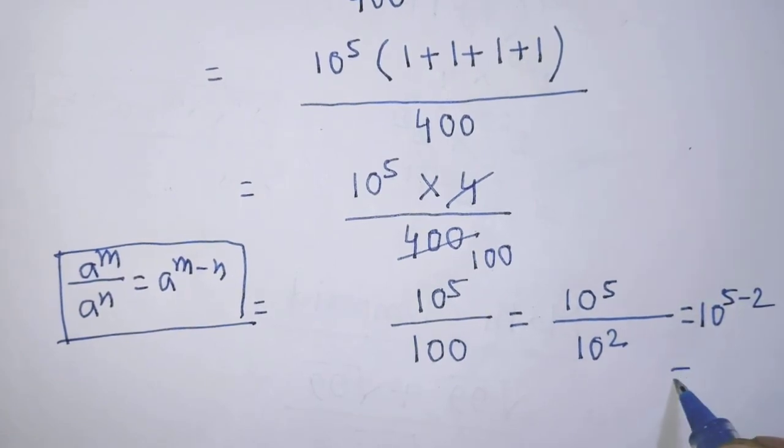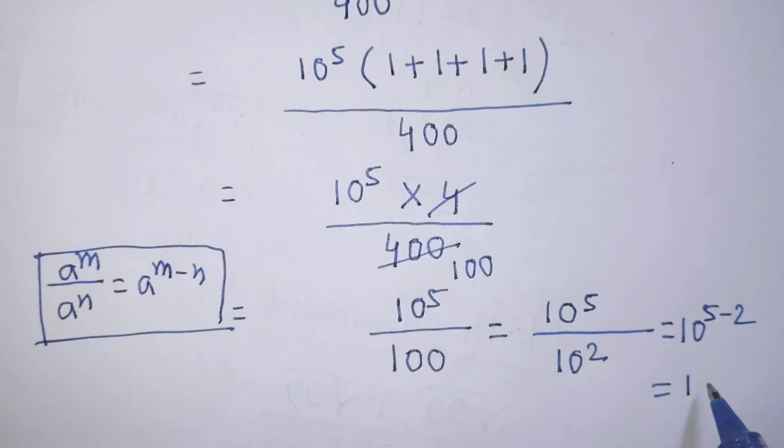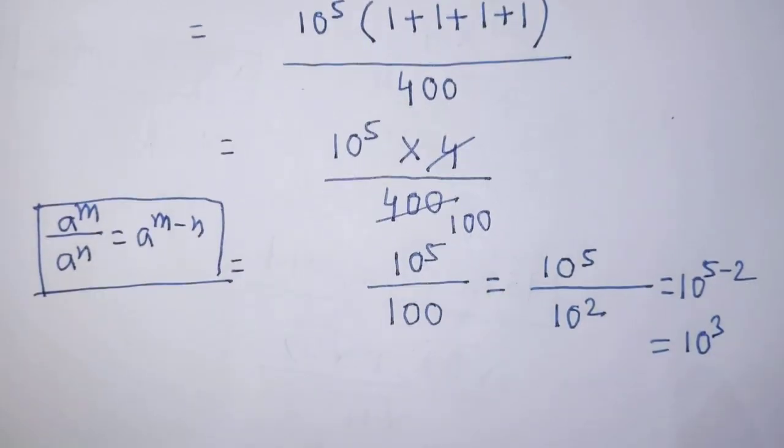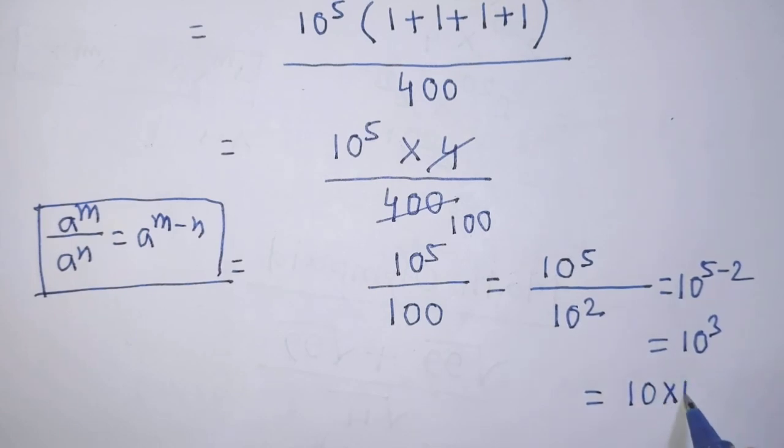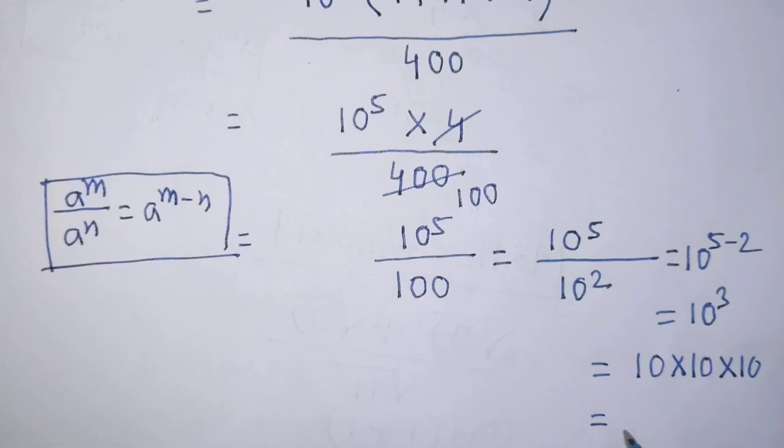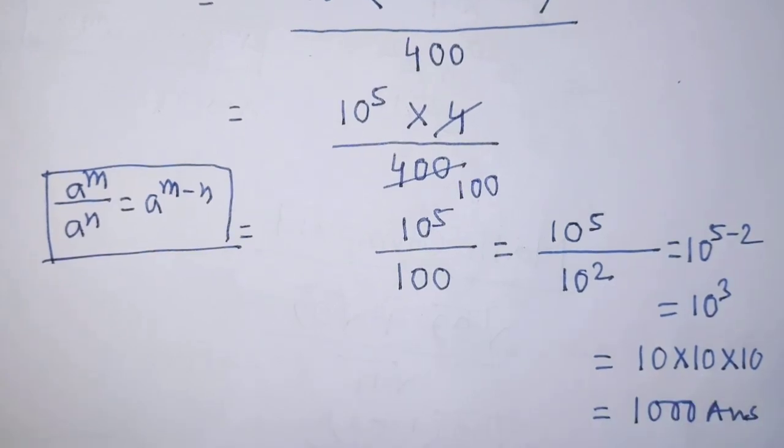After that, it will be 10 to the power 3. So 10 to the power 3, that is 10 times 10 times 10, that is 1000. This is our final answer.